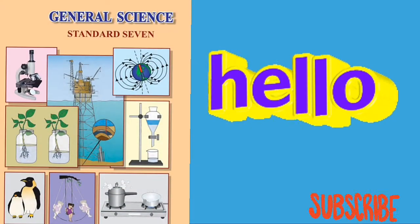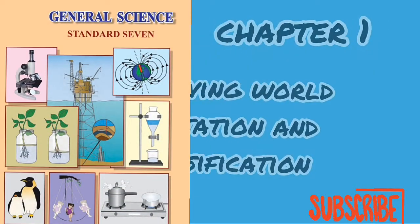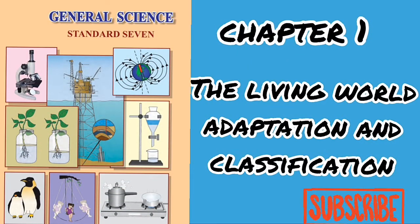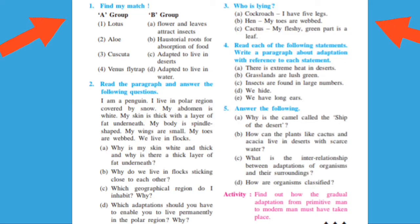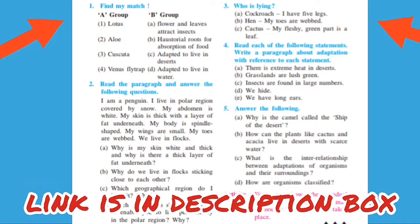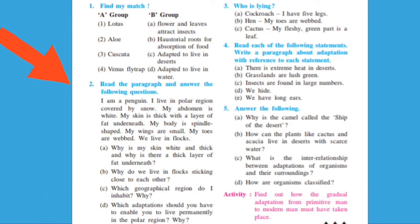Hello dear students. We are going to see Class 7 Science Chapter 1, The Living World — adaptation and classification question answers. Question number 1 and question number 3 we have already seen in a short video, the link of which is in the description of this video. We will see question answers from question number 2.